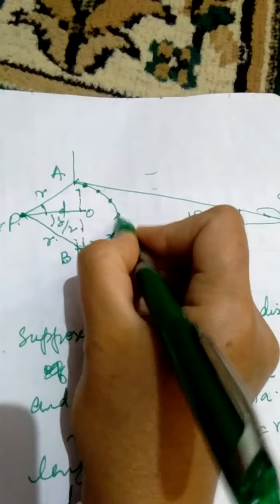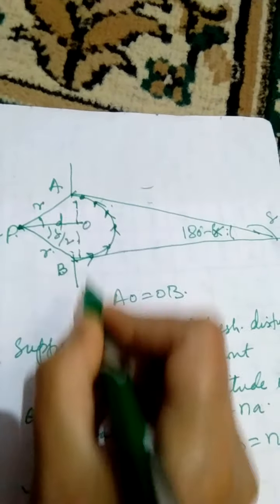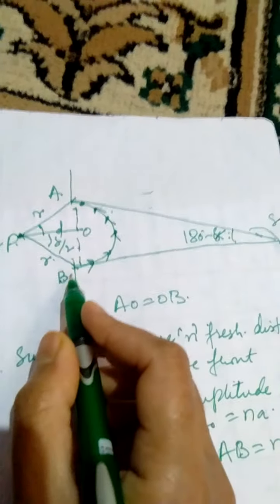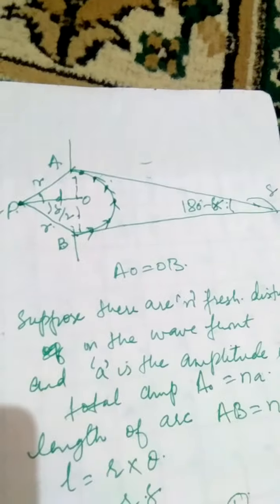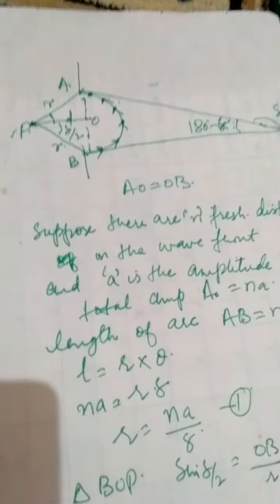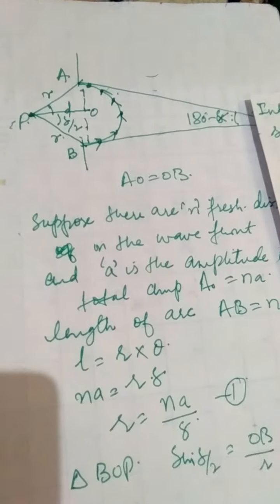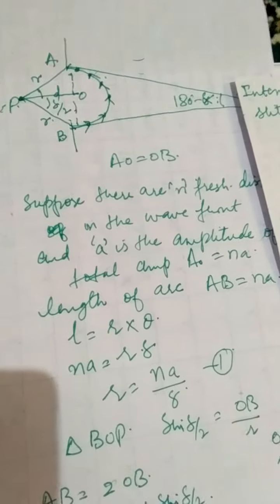So these were the different disturbances and AB was the resultant. We have used the polygon law of vectors. I hope that gives you a fair idea of the intensity distribution pattern due to diffraction from a single slit.